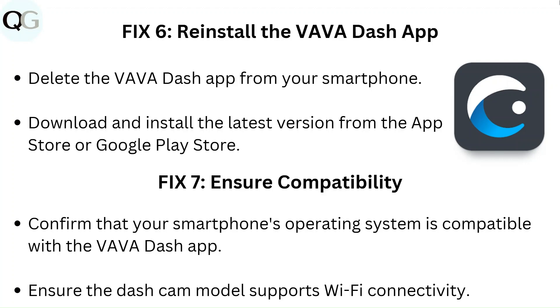Fix 7: Ensure compatibility. Confirm that your smartphone's operating system is compatible with the Wawa Dash app, and ensure the dashcam's model supports Wi-Fi connectivity.